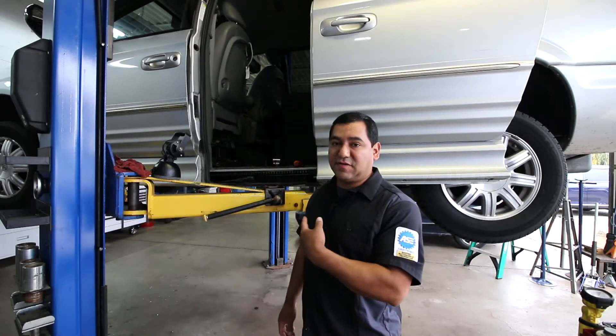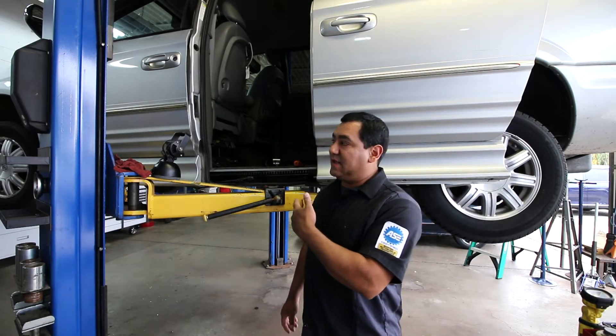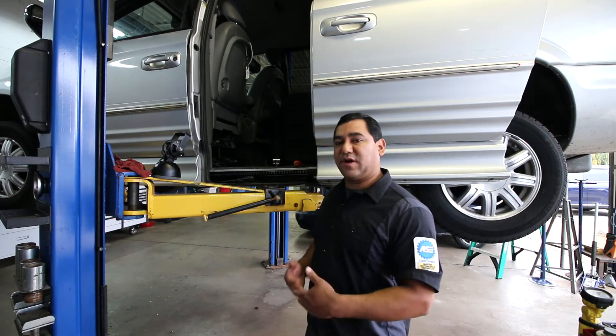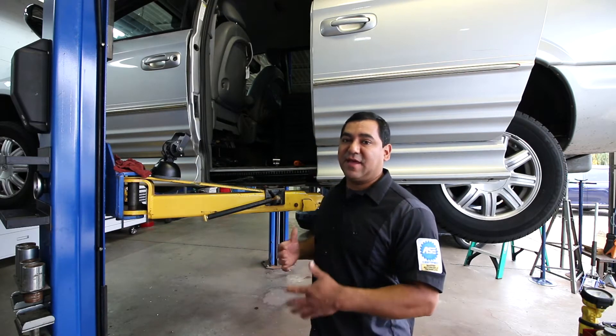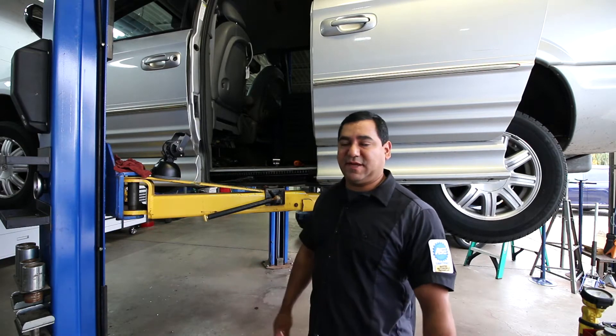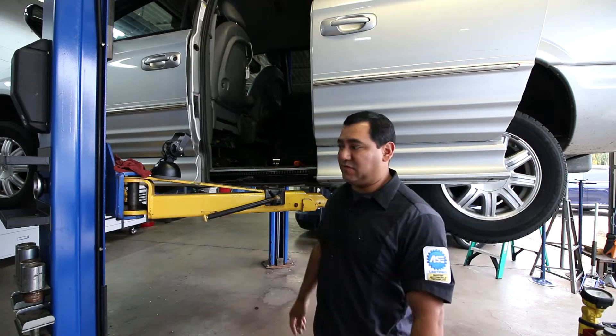In the last video we did the power sliding doors on a Toyota, so we're going to run through a problem here that you might run into on Chryslers. We'll go through step-by-step on how to figure this out. If you don't have a scan tool or if you do, it doesn't matter - you don't have to have special tools to do it.